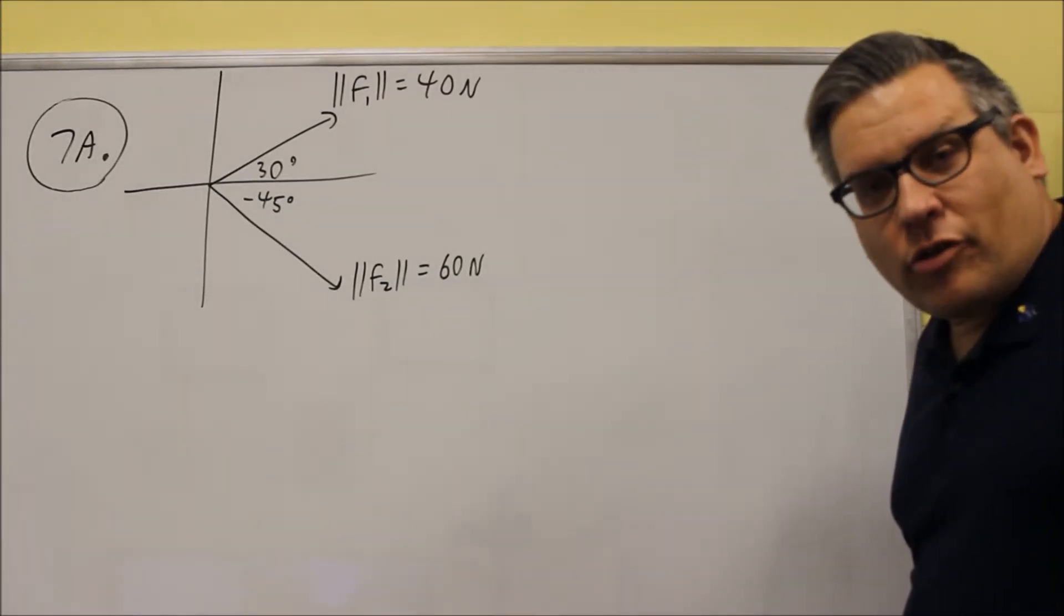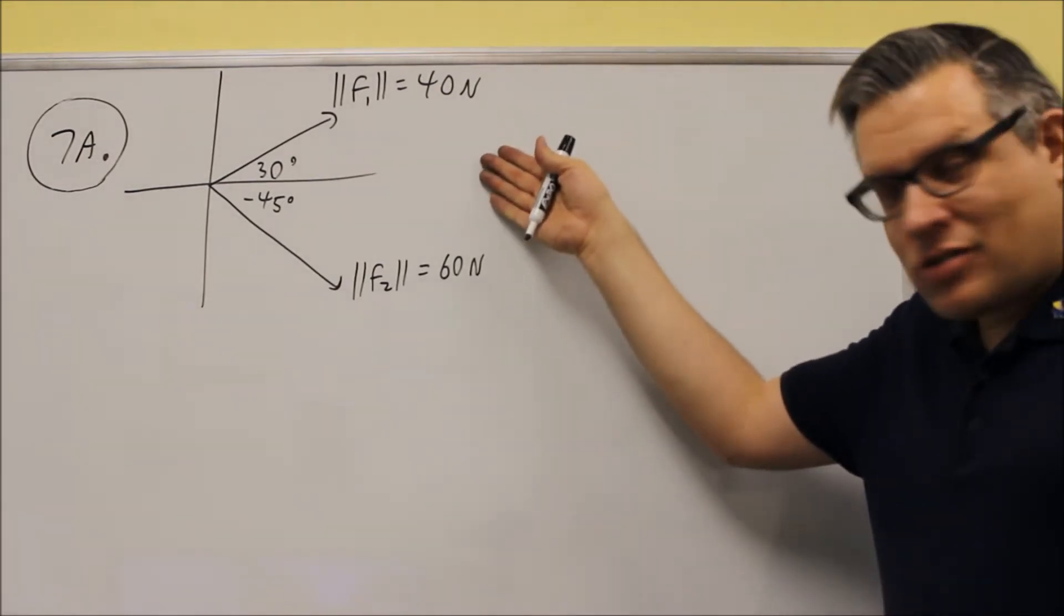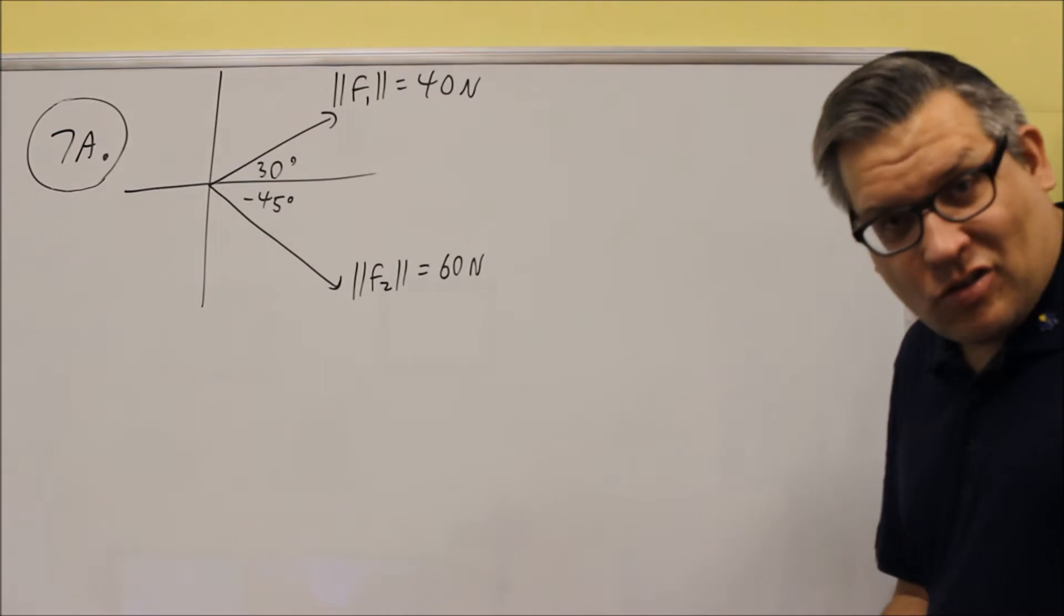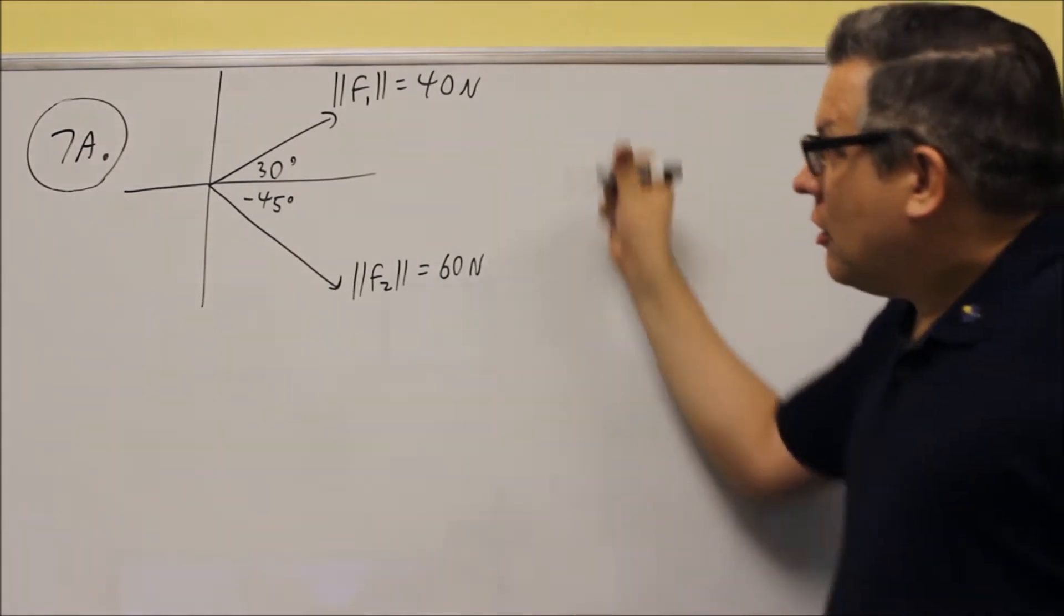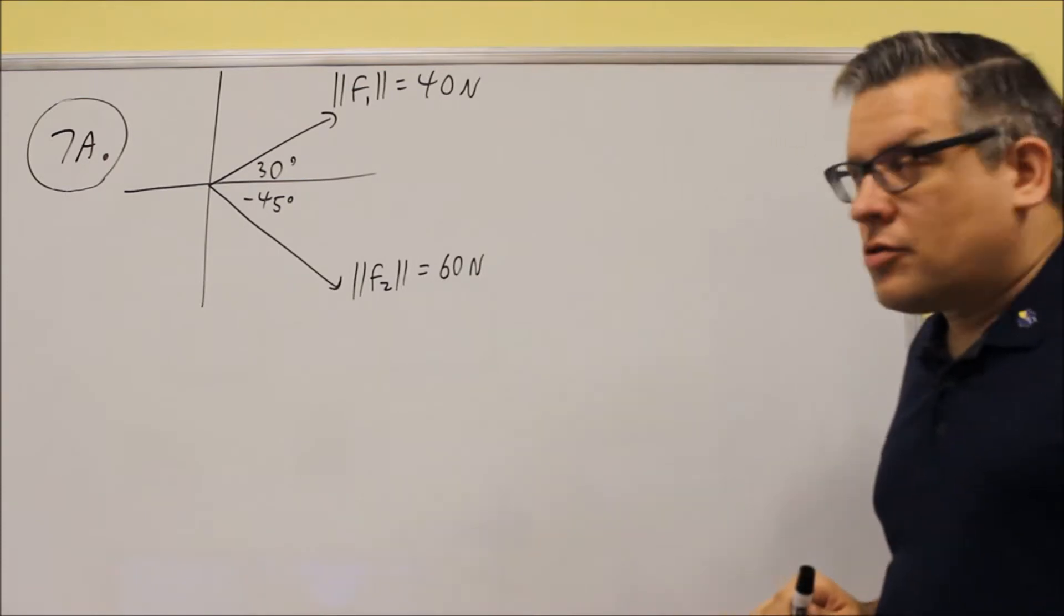They want us to find the magnitude and direction of the resultant force. Now they're going to be giving you a picture on the test. It's going to be provided something like this. There's not going to be any bearings, so you don't have to do any bearings on there. But it's going to give you something like that where they give you the angles and everything is all drawn out.